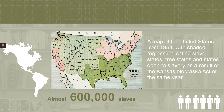In the map, we have the slave state portion — the green part — and the pink part represents the free states, with almost 6,000 slaves indicated.